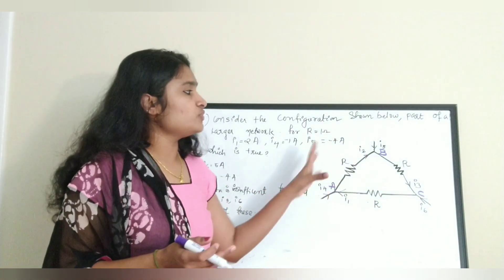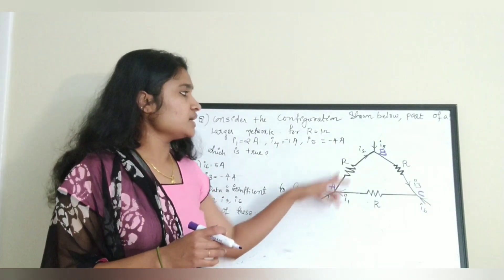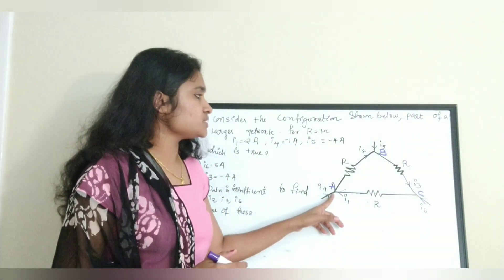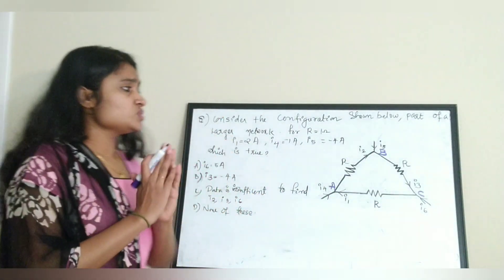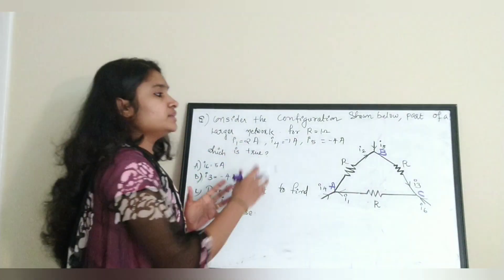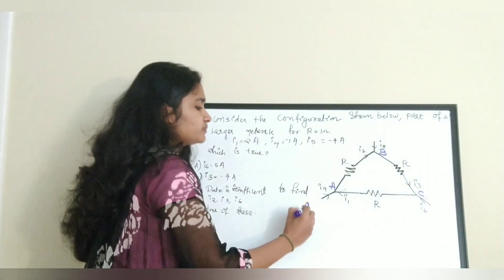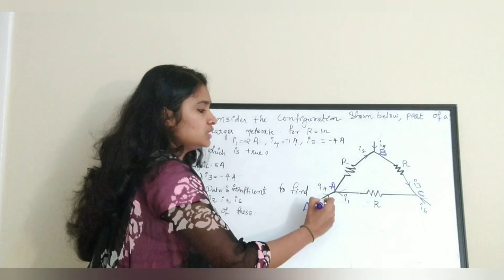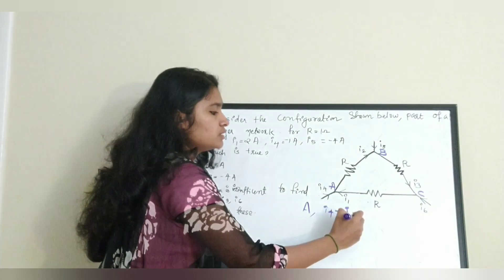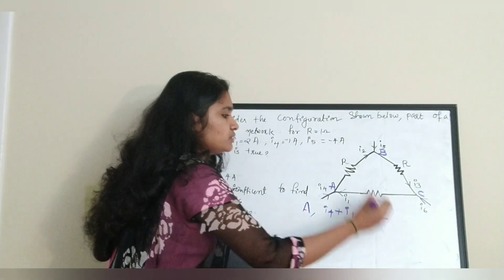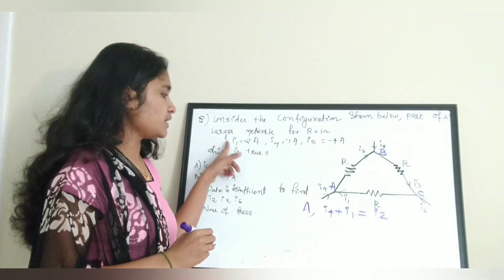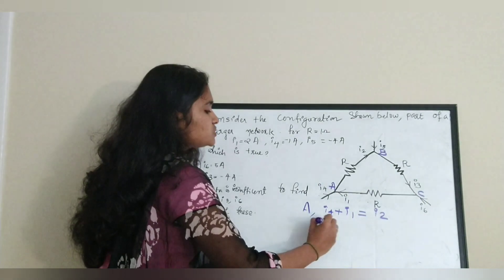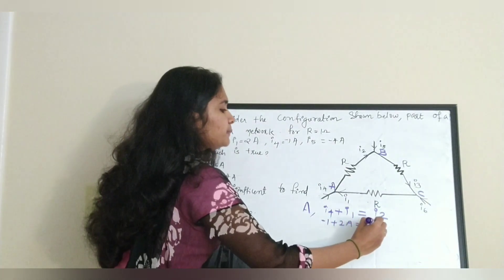We will try to find the current values in the network. Three current values are given: I1, I4, and I5. We will find the remaining three. The nodes are named A, B, and C. Applying KCL at node A — sum of currents entering equals sum leaving: I4 + I1 = I2. Substituting: −1 + 2 = 1 Ampere, so I2 = 1 Ampere.